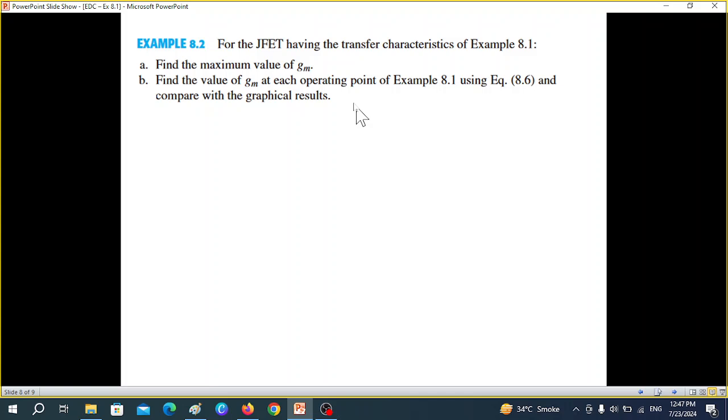Now let's see this question. For the JFT having the transfer characteristics for example 8.1, same characteristics, we have to find the maximum value of GM first of all. And then find GM at each operating point of example 8.1. So you see there were three operating points. So we're using that. And then compare the results with the graphical results. Let's do it one by one.